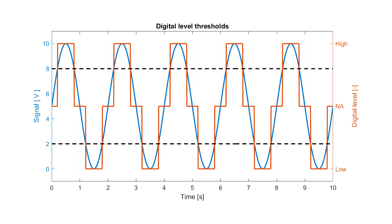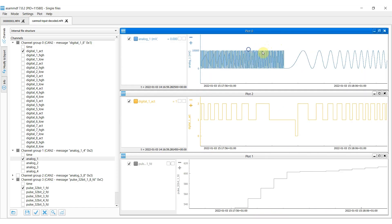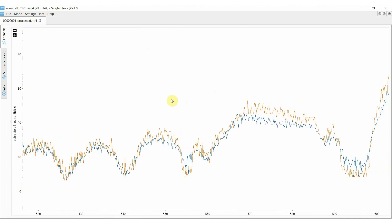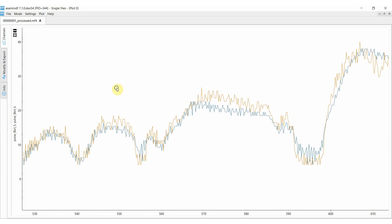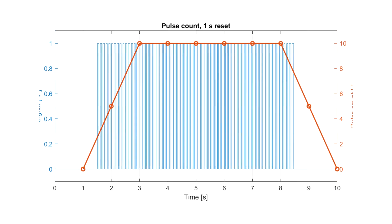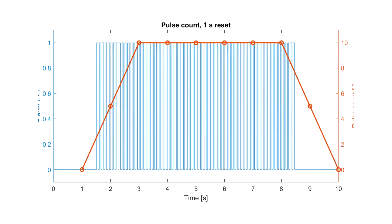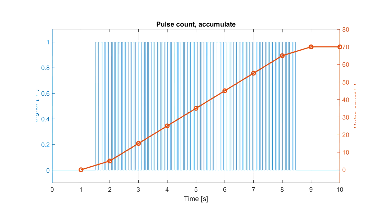On top of this, the module also supports pulse measurements of all channels at a sampling rate of 16 kHz in either frequency mode or counter mode.